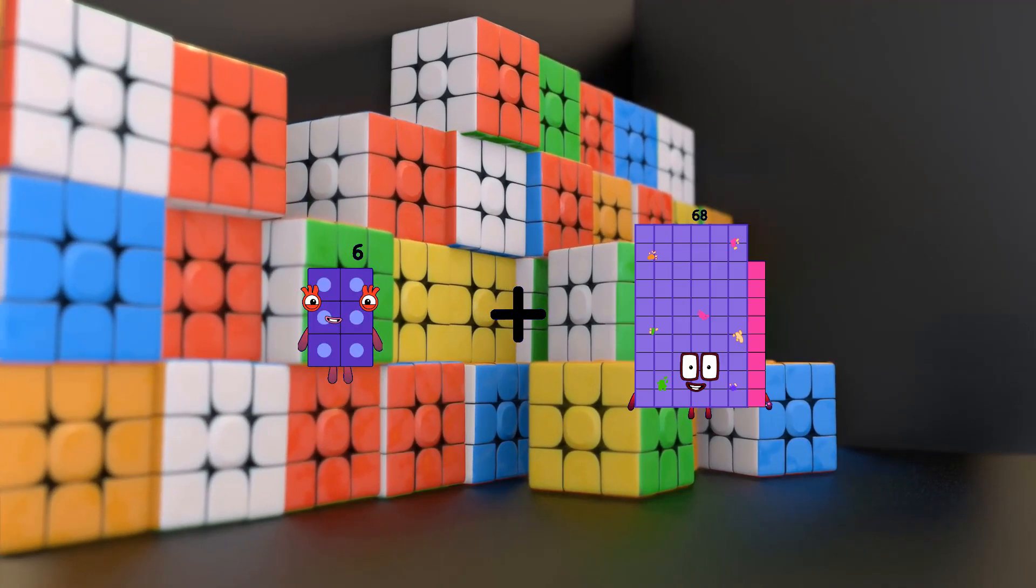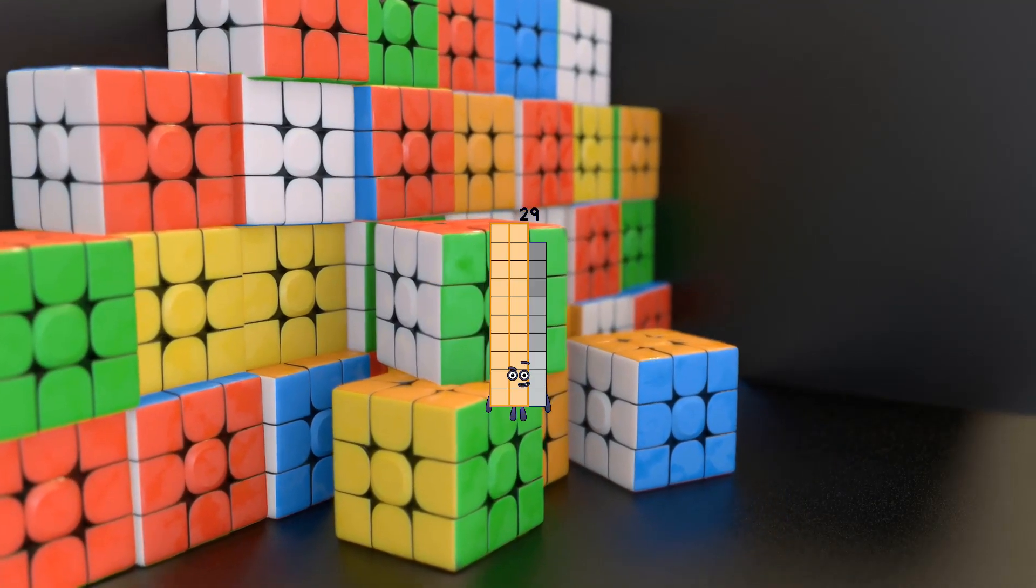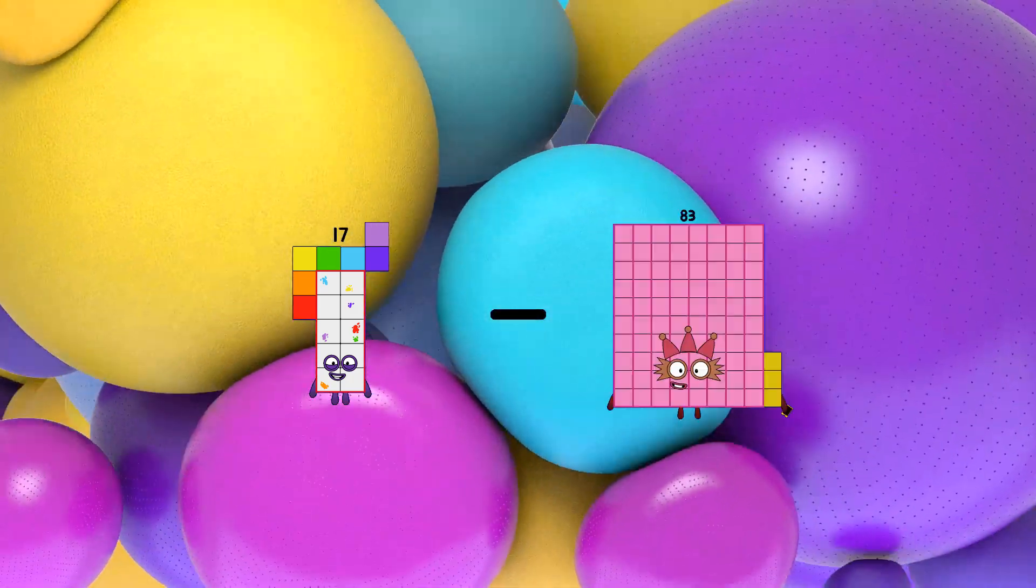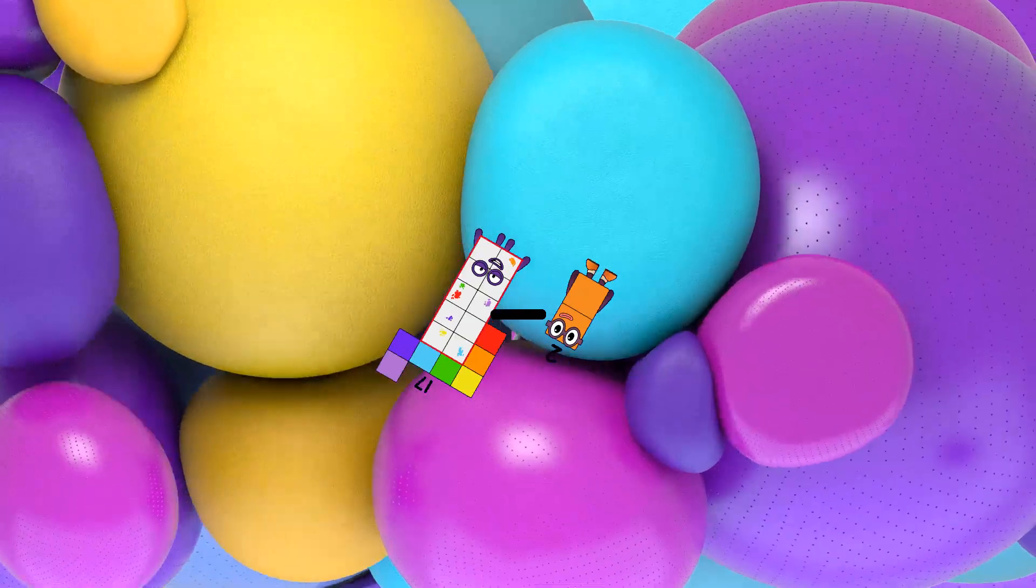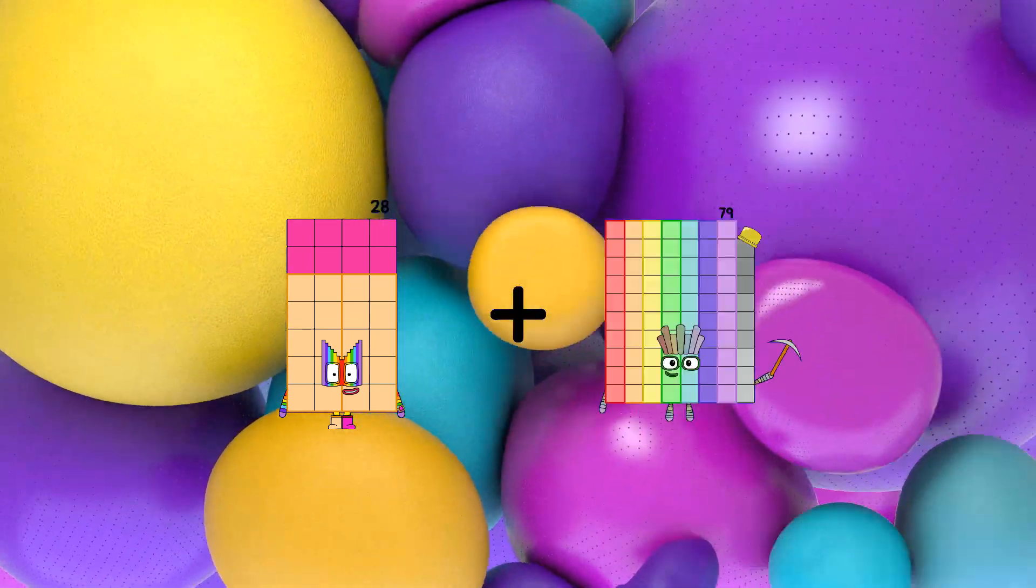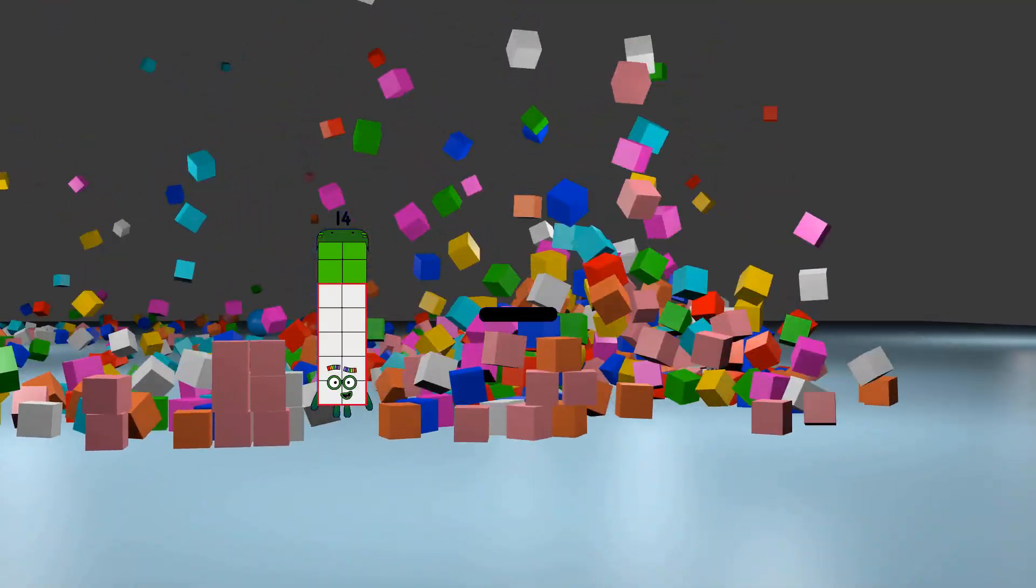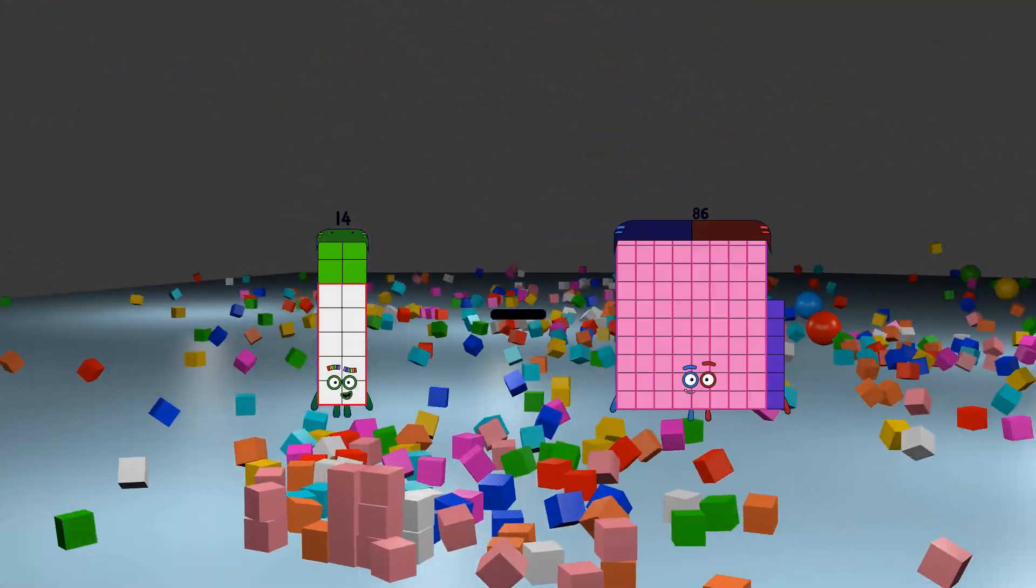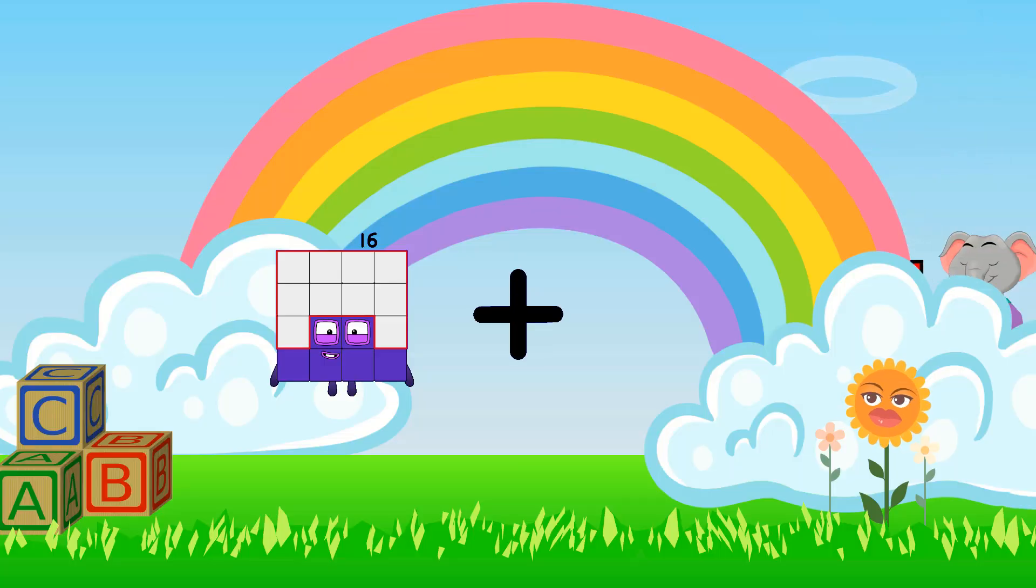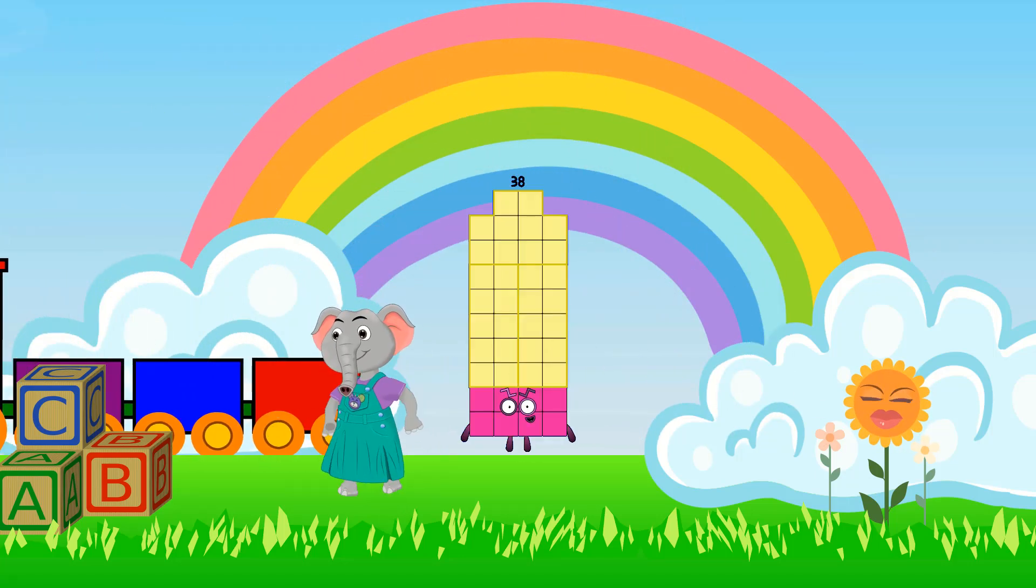6 plus 23 equals 29, 17 minus 2 equals 15, 28 plus 3 equals 31, 14 minus 14 equals 0, 16 plus 22 equals 38.